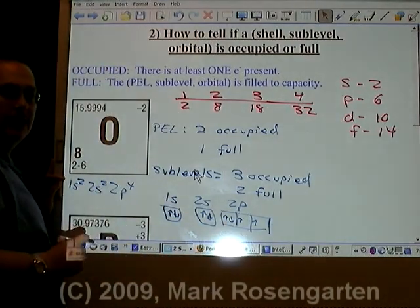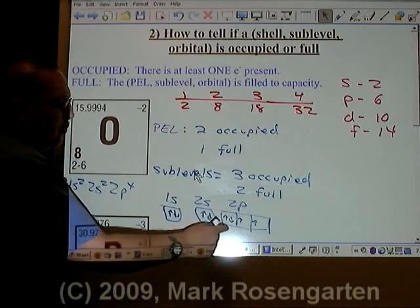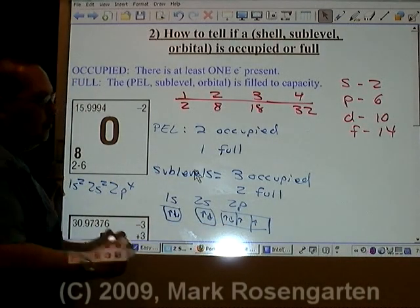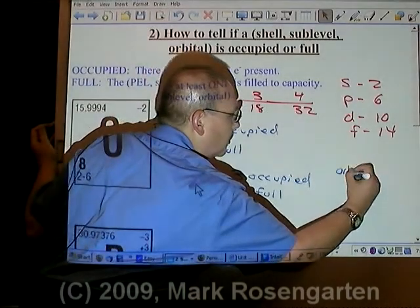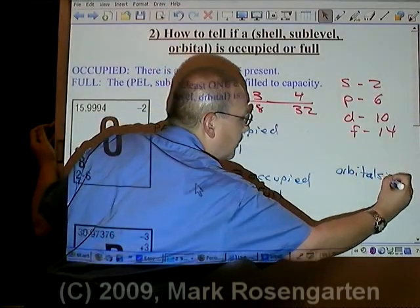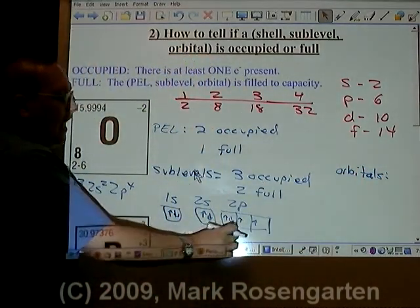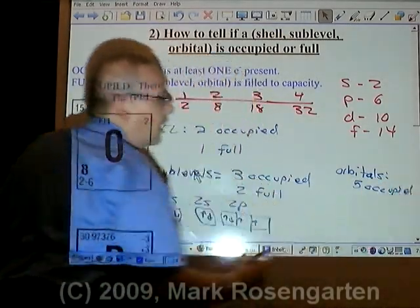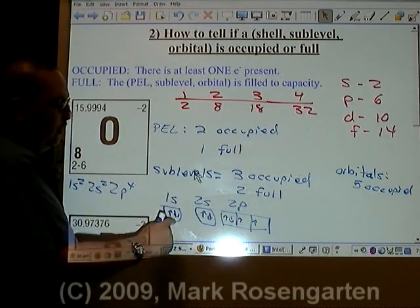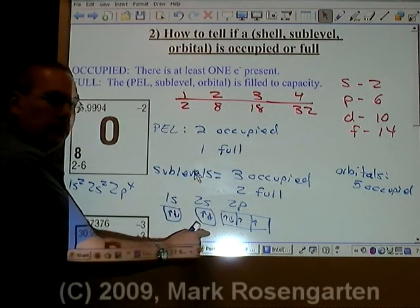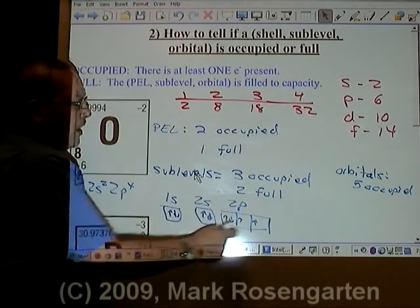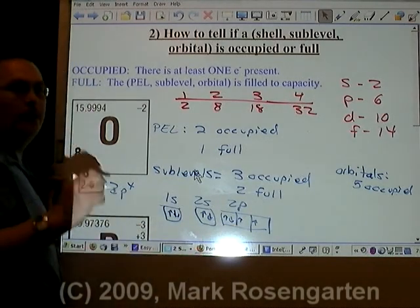So how many orbitals have electrons in them? One, two, three, four, five orbitals have electrons occupying them. Okay, so we have five that are occupied. How many of them are full? This one's full with two. This one's full with two. This one's full with two. These are unpaired. So there's only three full orbitals.